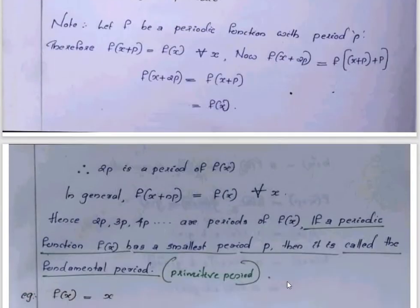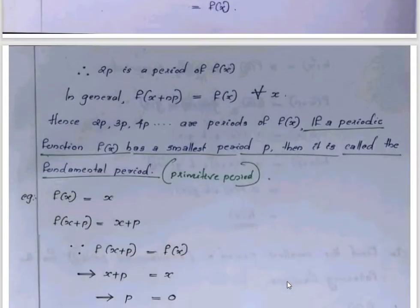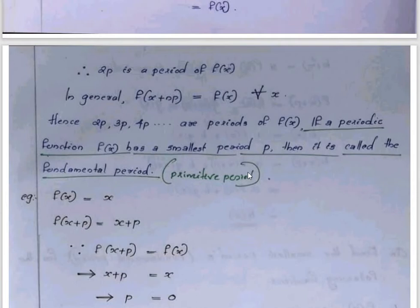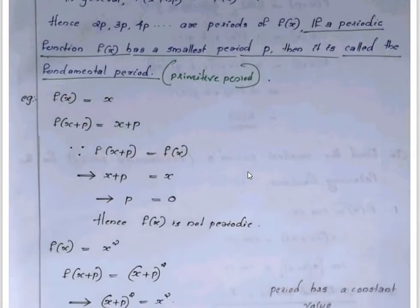This is an important definition. If a periodic function f of x has a smallest positive period p, that smallest positive period p is called the fundamental period or primitive period.